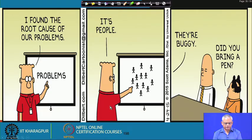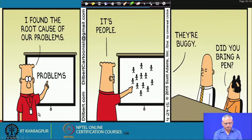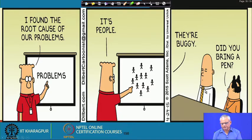This is a Dilbert cartoon from dilbert.com, just for a lighter moment but it holds a message. Dilbert is giving a presentation saying 'I found the root cause of our problems — it is people; they make mistakes, they are buggy.' And the manager says 'Did you bring a pen?' — and he has already forgotten to bring a pen, so he has made a mistake. This illustrates that people forget and make mistakes, even very experienced people, and that is the reason why there are bugs in code.